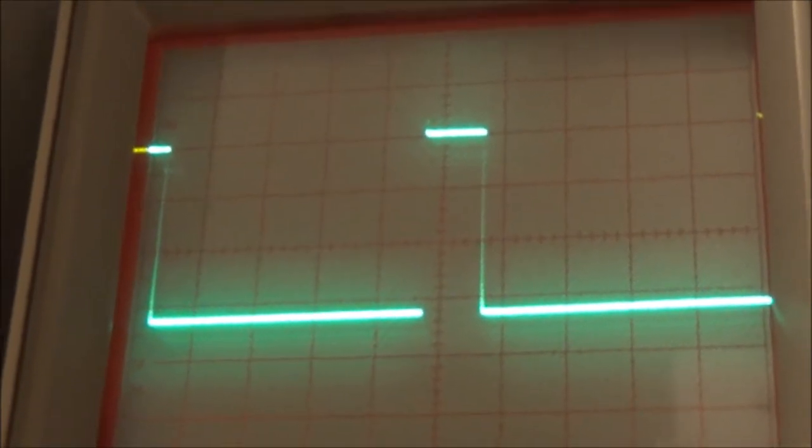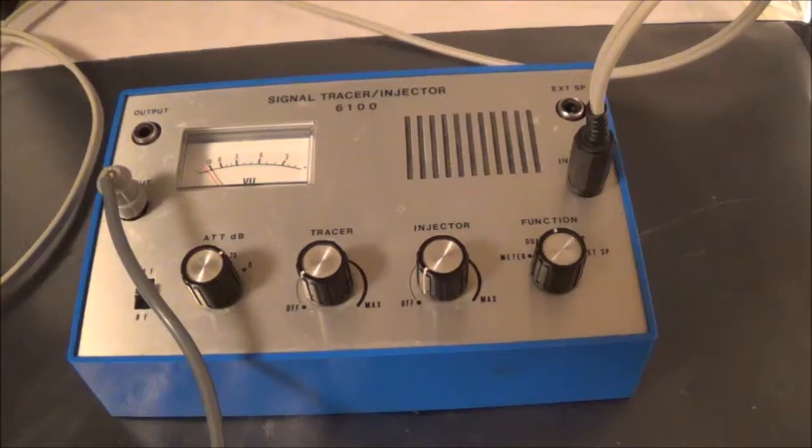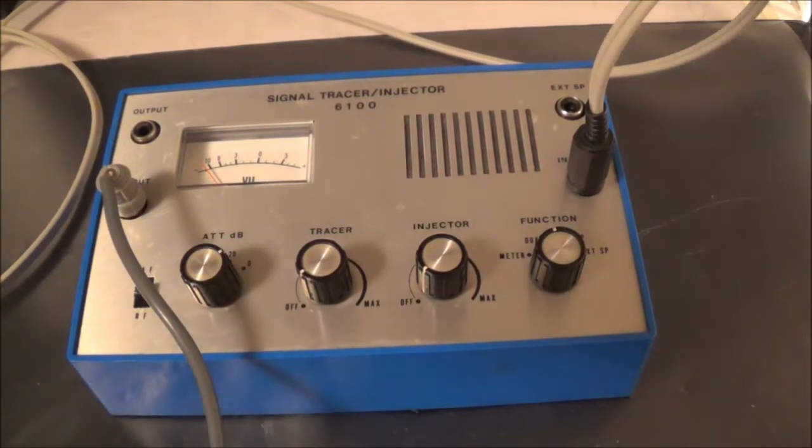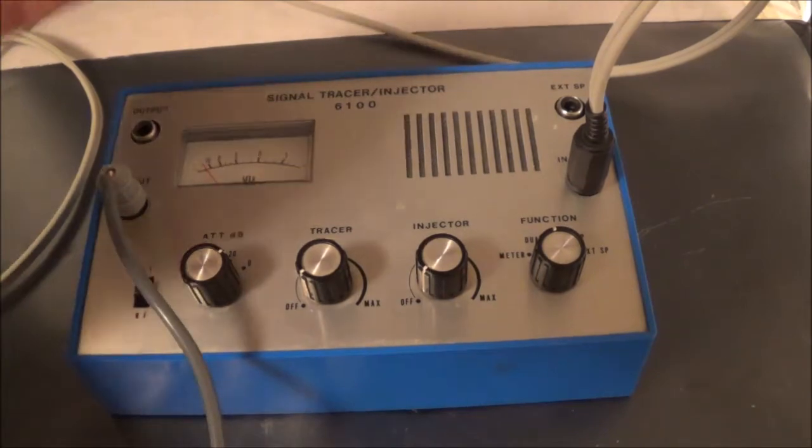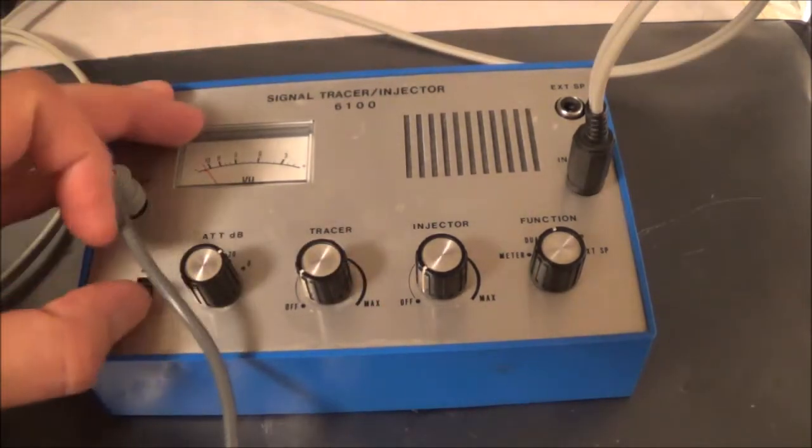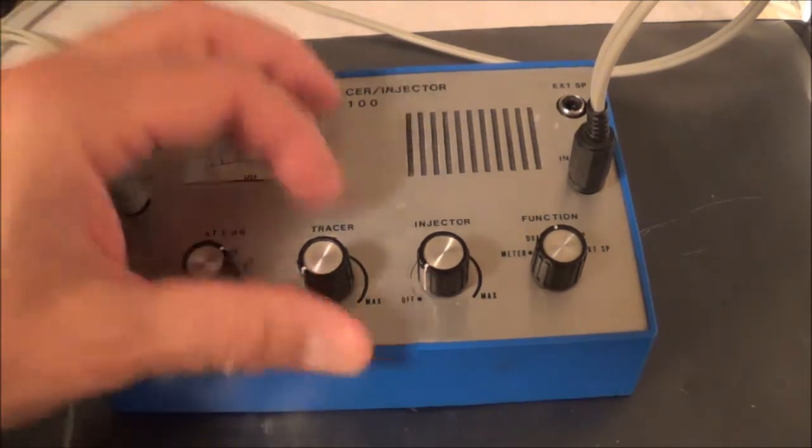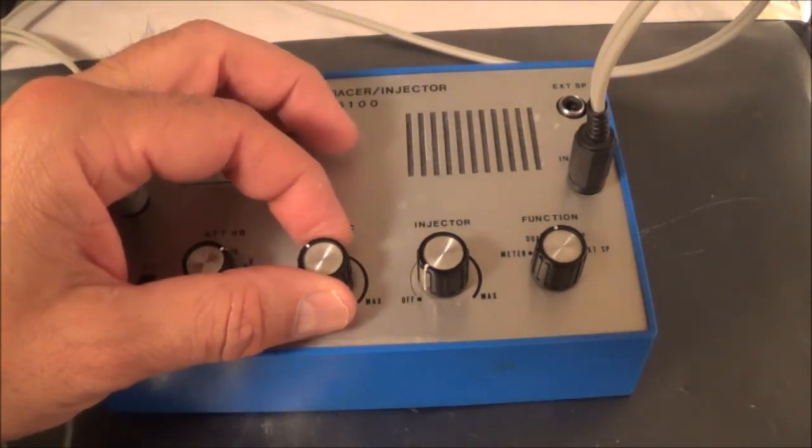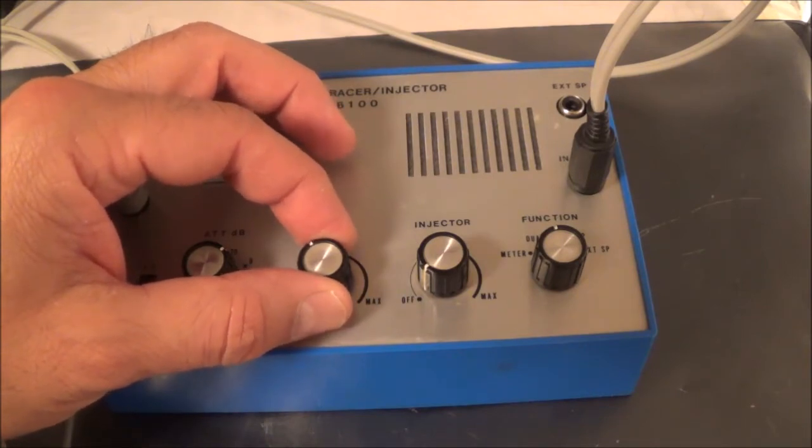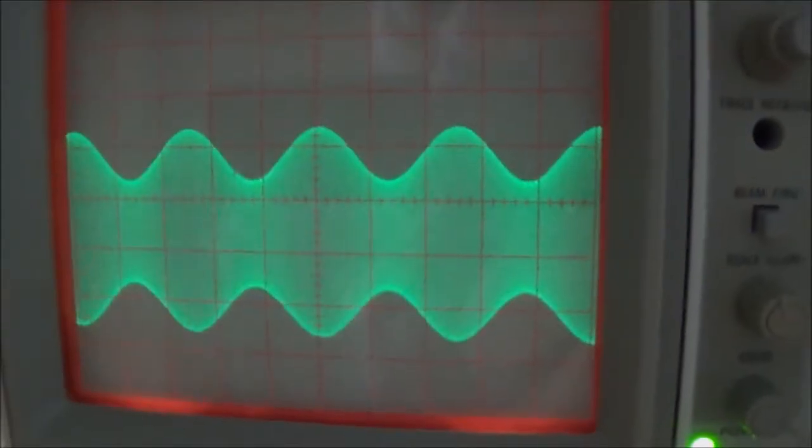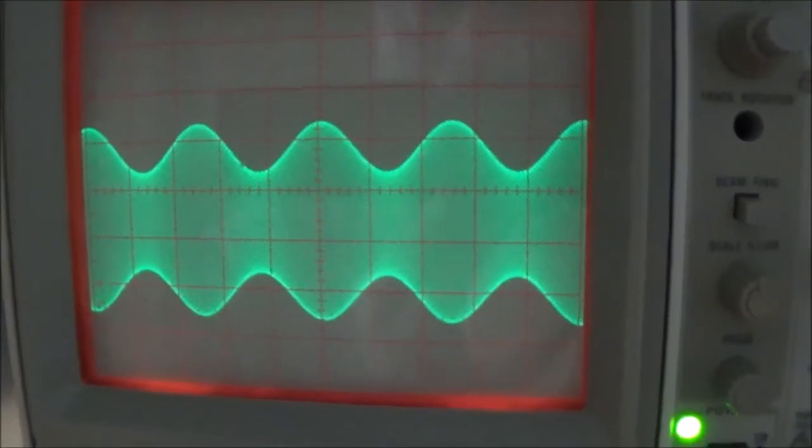Now to demonstrate the tracer, I've got the AM/FM generator hooked up and I'm going to be feeding an AM signal. I'm going to be feeding an amplitude modulated signal at one megahertz. That's going to be modulated by 400 hertz. I've got to put this in the RF position, which it already is.